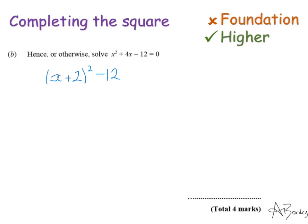Once you've completed the square, you can use this to solve an equation. This is part b and says hence or otherwise solve. It's the same expression but they've turned it into an equation by putting equals 0. I've written out my answer to part a, and they're saying this now equals 0. This will be non-calculator.